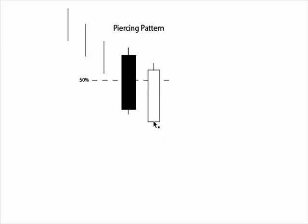Price then reverses and closes at least beyond the 50% mark of the previous candlestick's real body. If it were to close higher than the open of the real body, that would change this into another pattern — a bullish engulfing pattern. So a piercing pattern is almost an incomplete bullish engulfing formation. Price needs to open and close at least at or beyond the 50% mark of the last candlestick's real body.